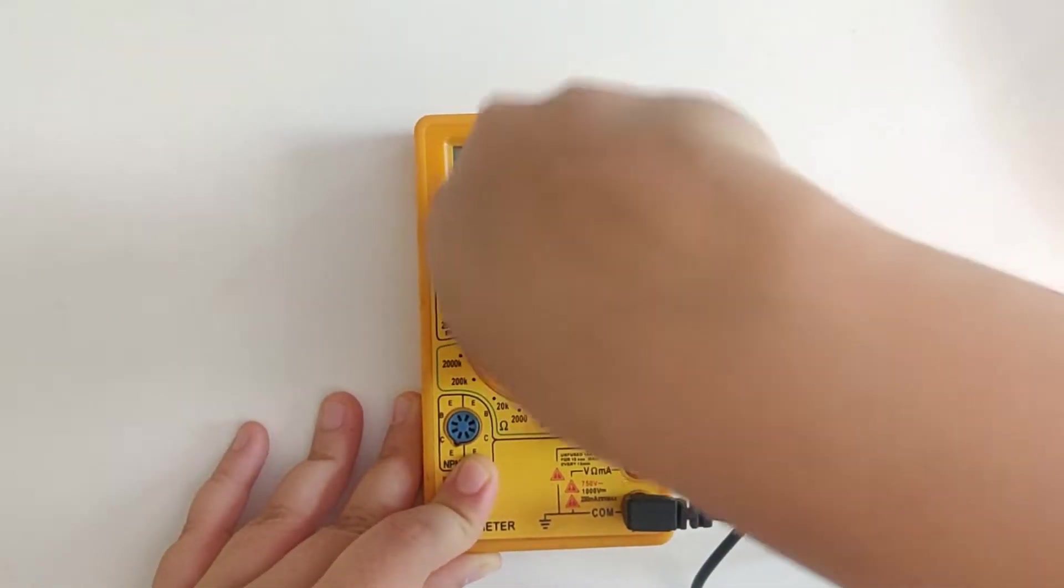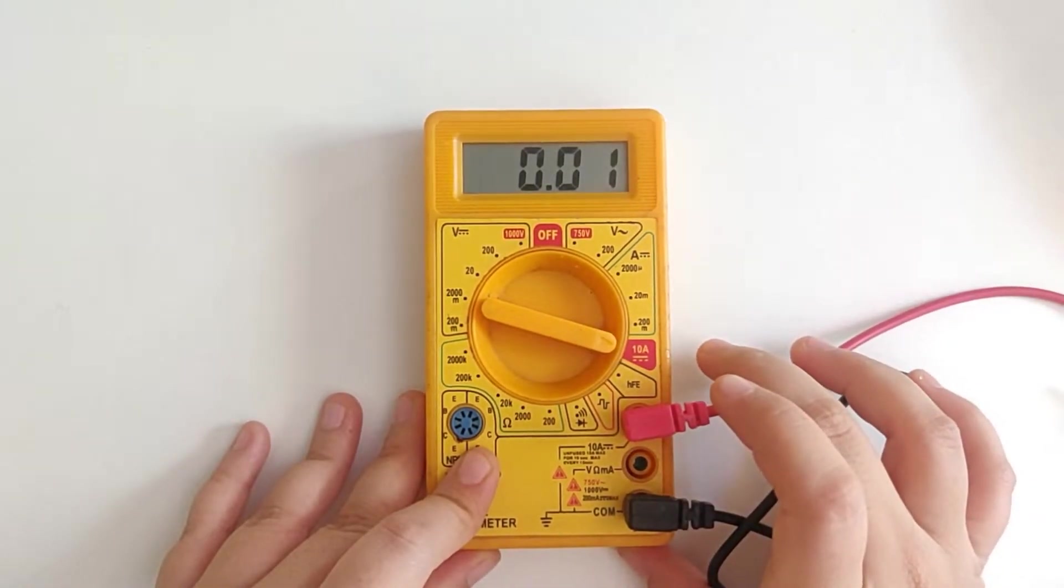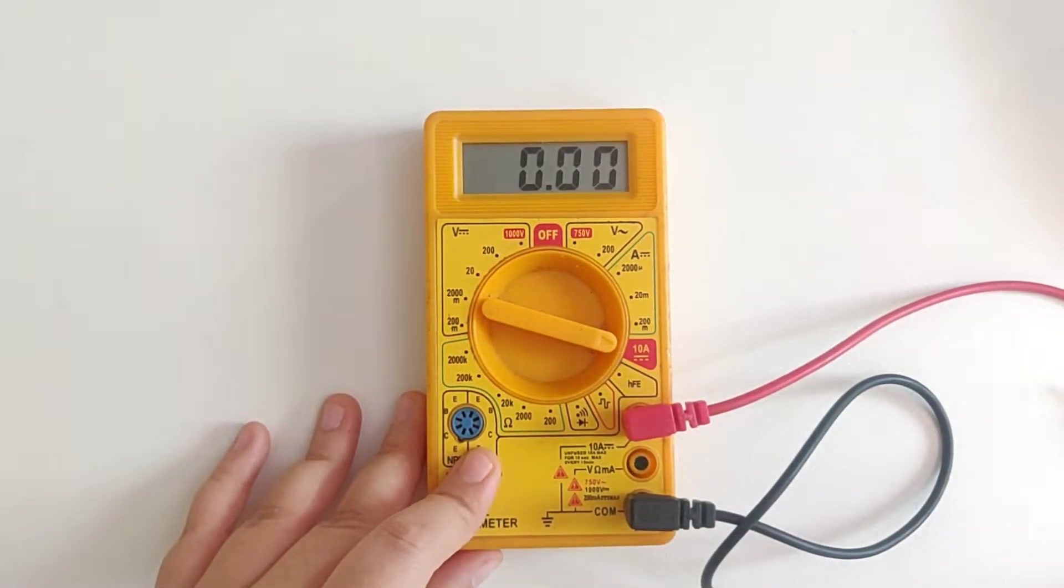For the 10 amperes port, you just have got one range, which is 10 amperes. And when you switch to 200 milliamperes, there are various settings. We'll look at all those in a while. So that's about leads and settings.